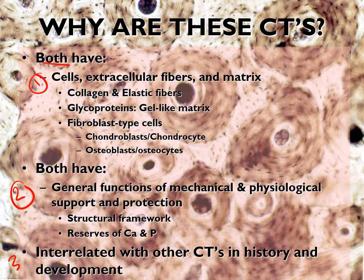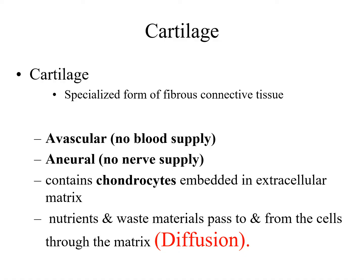The third reason is that they are interrelated with other connective tissue in history and development. Cartilage develops directly from mesenchymal connective tissue, whereas for bone we have two types of formation. The first is intramembranous ossification, where mesenchymal cells transform into osteoblasts and release fibers and matrix, which is then ossified. So there is a relationship in development between cartilage, bone, and mesenchymal connective tissue.